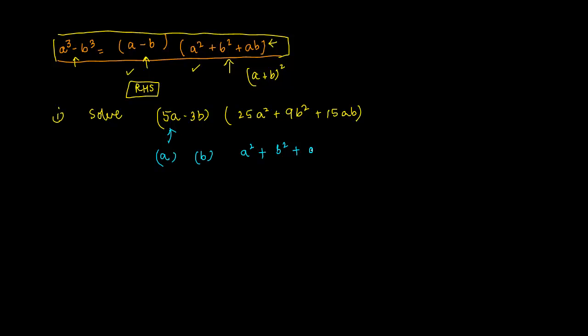What do we notice? We notice that this has basically become something like this identity, so we can simply reduce this to a³ - b³.